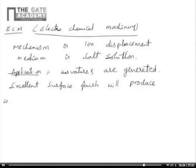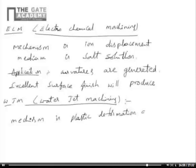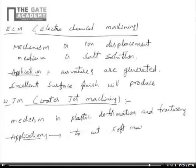Next is Water Jet Machining. Here a jet of water is directed at high speed onto the material. The mechanism is plastic deformation and fracturing. Applications include cutting soft materials like rubber — for example, shoes are actually manufactured with the help of water jet machining.